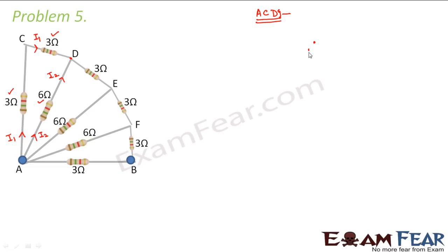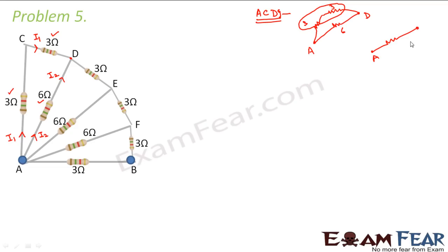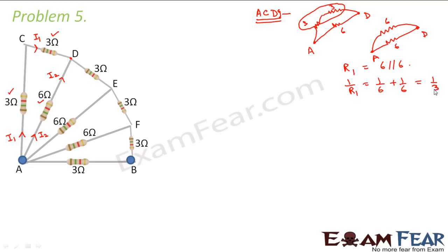Their series combination is in parallel with the 6 ohm because they share the same starting and ending points. If you draw this, you have point A and point D with one path of 3 ohm + 3 ohm (= 6 ohm) in parallel with 6 ohm. So 1/R1 = 1/6 + 1/6 = 1/3, therefore R1 = 3 ohms. Instead of the entire ACD section, we can replace it with a single 3 ohm resistance.